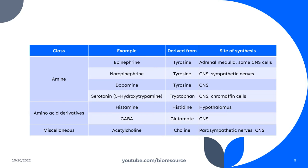Epinephrine is derived from tyrosine and the site of synthesis is the adrenal medulla and some central nervous system cells. Norepinephrine is derived from tyrosine and the site of synthesis includes the central nervous system and sympathetic nerves. Dopamine is derived from tyrosine and the site of synthesis is the central nervous system. Serotonin is derived from tryptophan and the site of synthesis is the central nervous system and chromaffin cells.